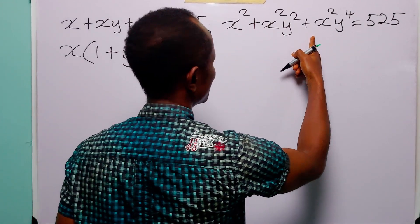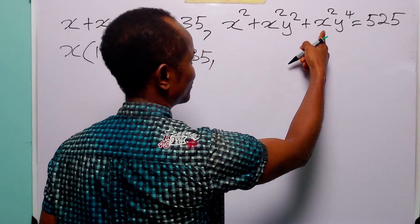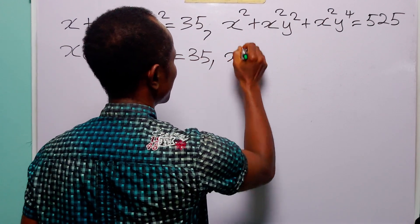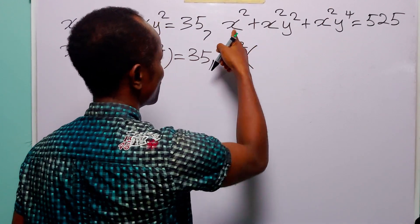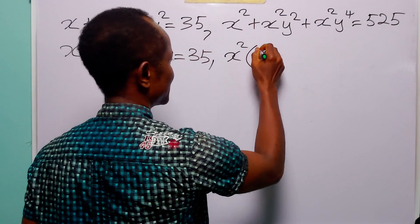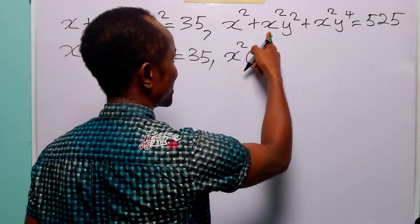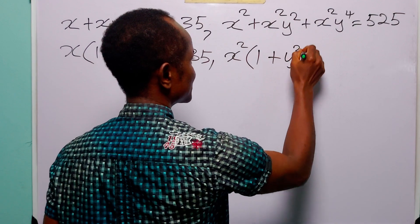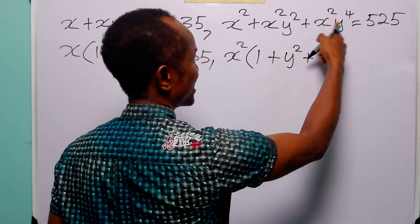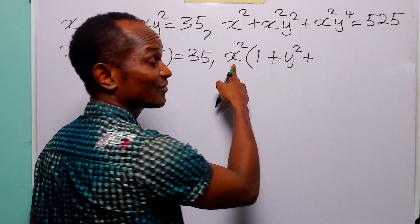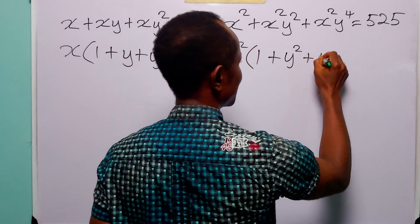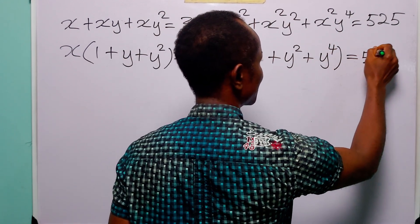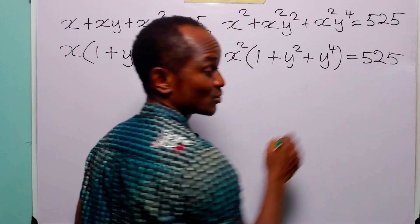In the second equation, we also have a common factor, which is x squared. We have x squared: x squared divided by x squared is 1, x squared y squared divided by x squared is y squared, and x squared times y to the power of 4 divided by x squared is y to the power of 4. And this remains equal to 525.